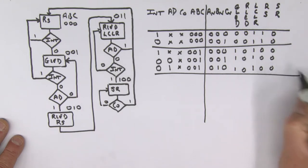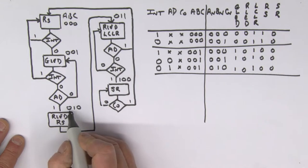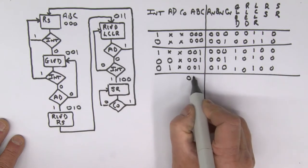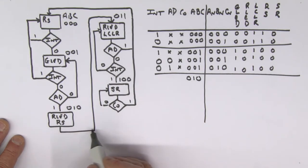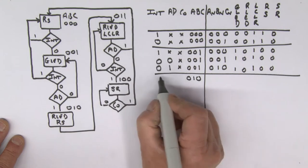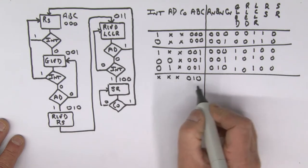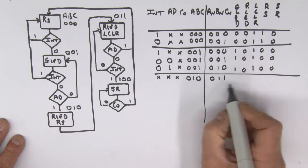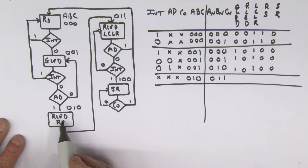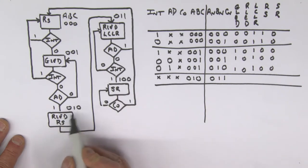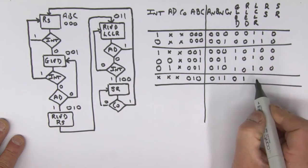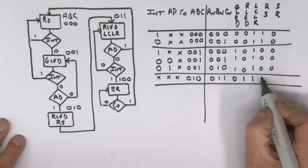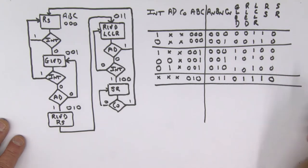For state 010: the next state is not dependent on any input — we always go to state 011 on the next clock edge, so we don't care about carry out, intrusion, or AD. Outputs in state 010: green LED off, red LED on, clear inactive (one), reset is one, siren zero.